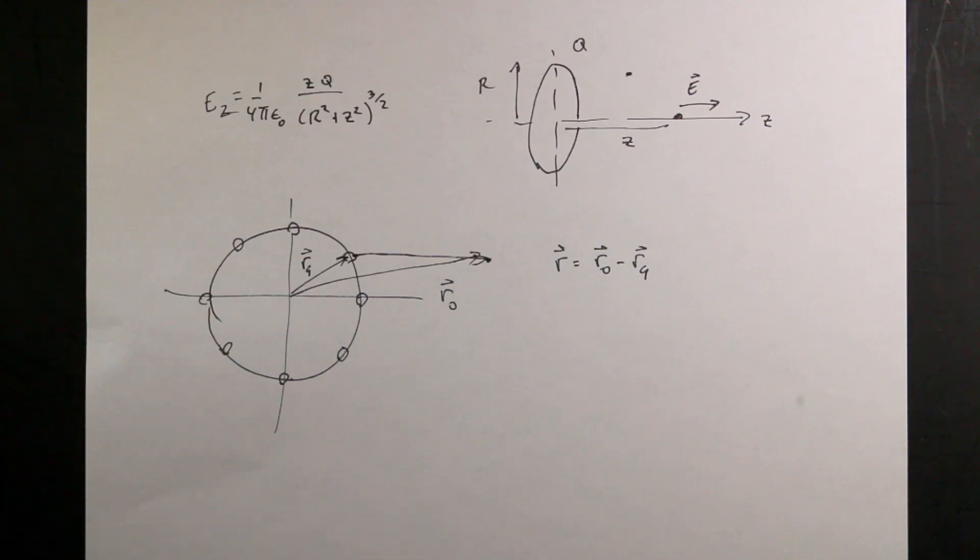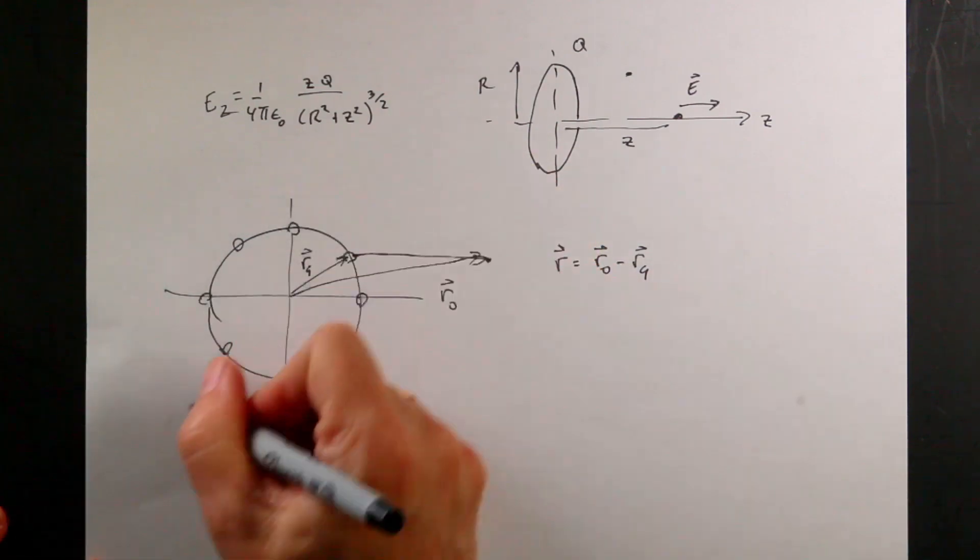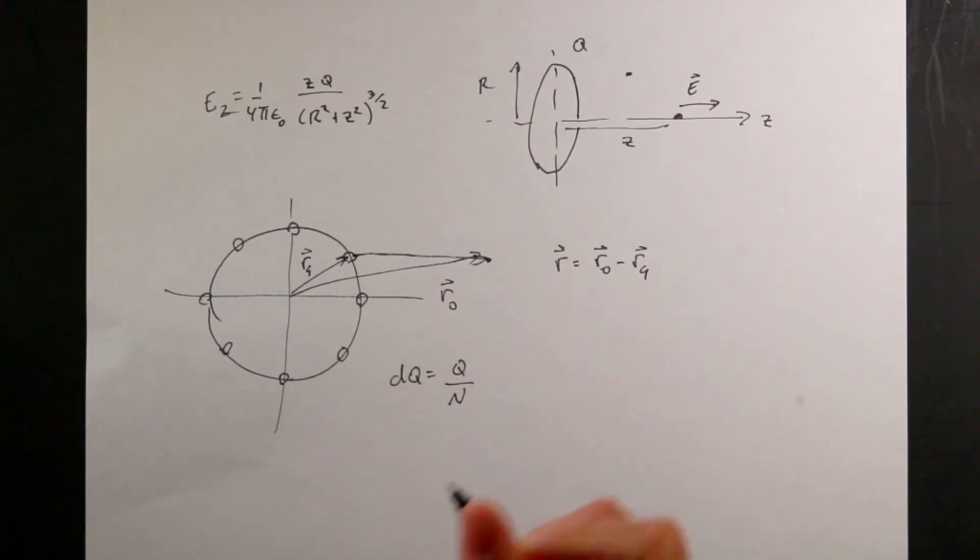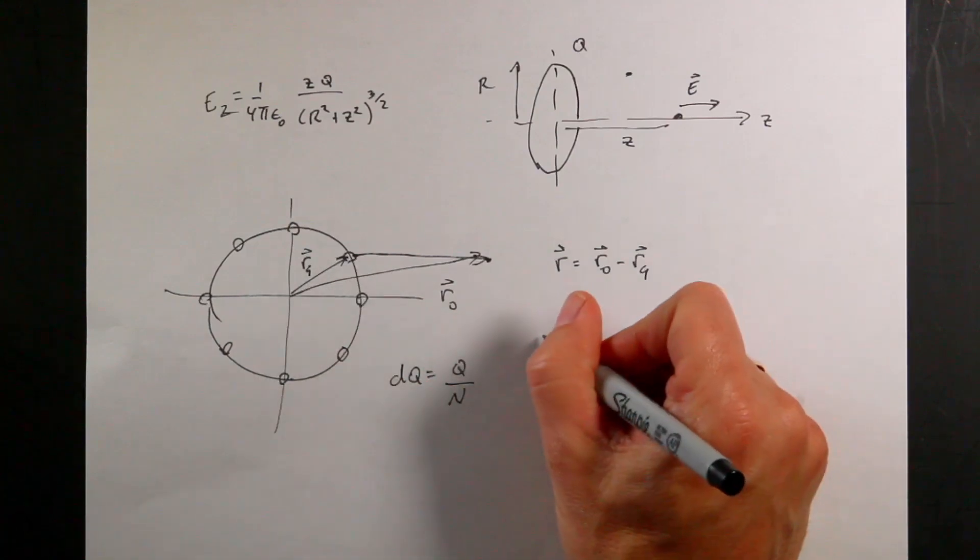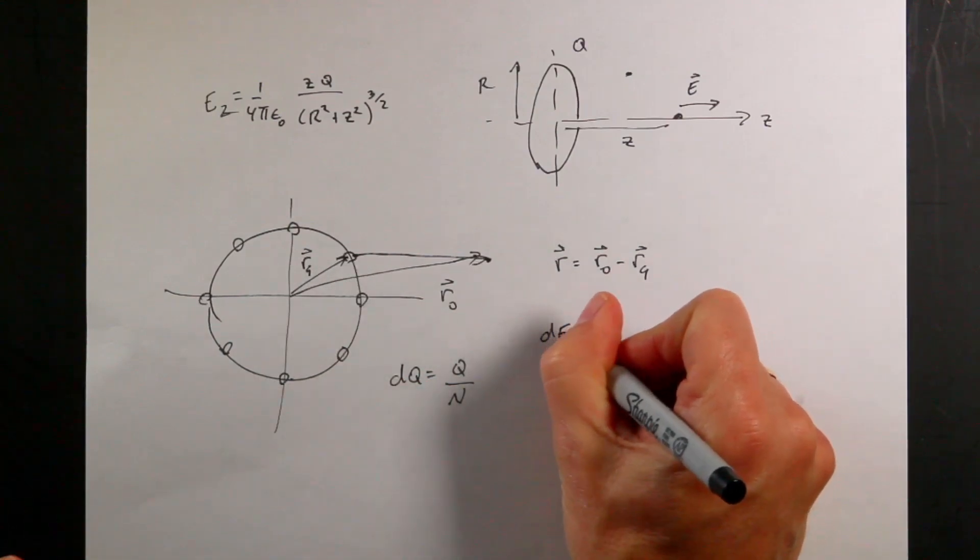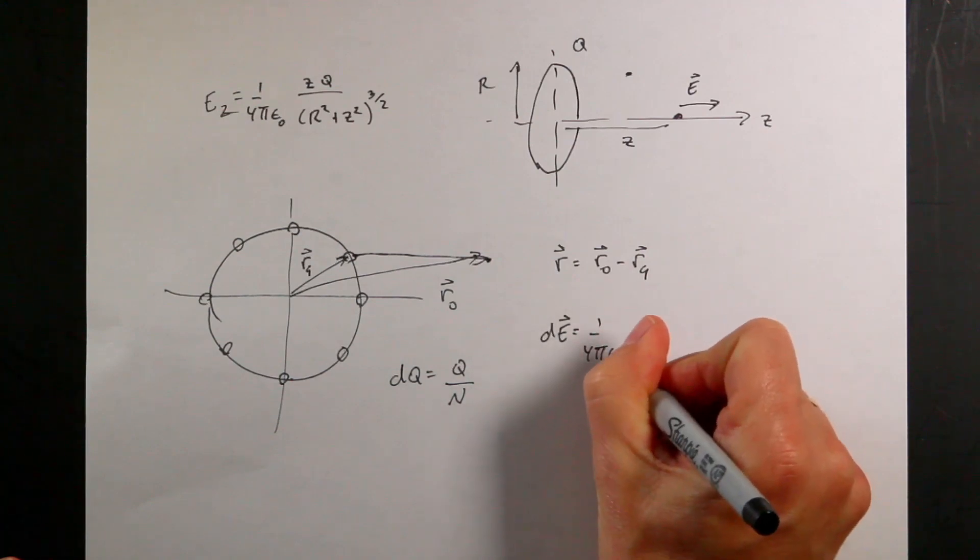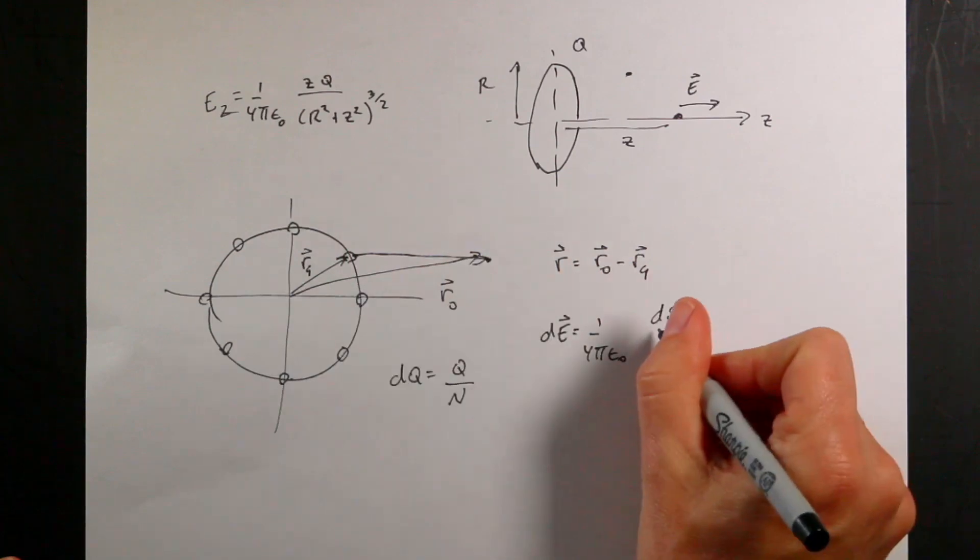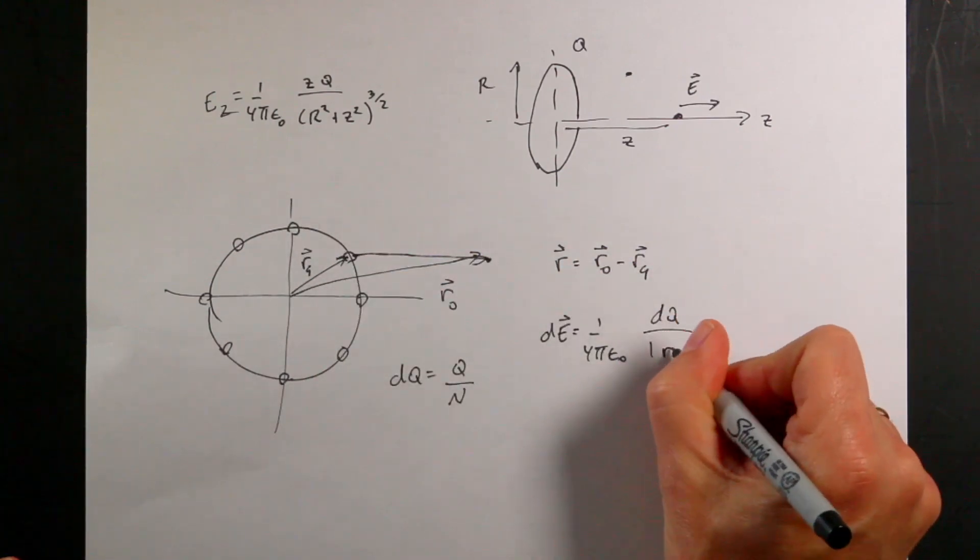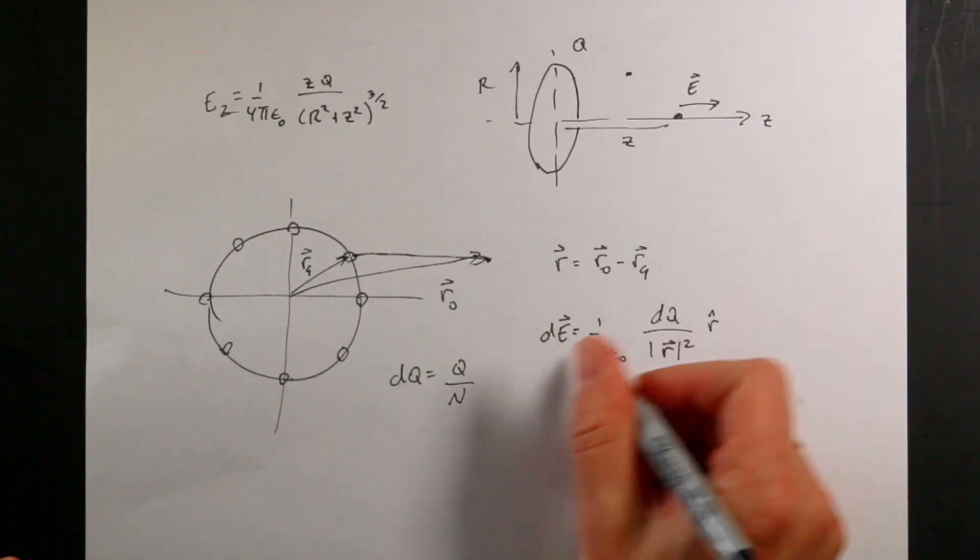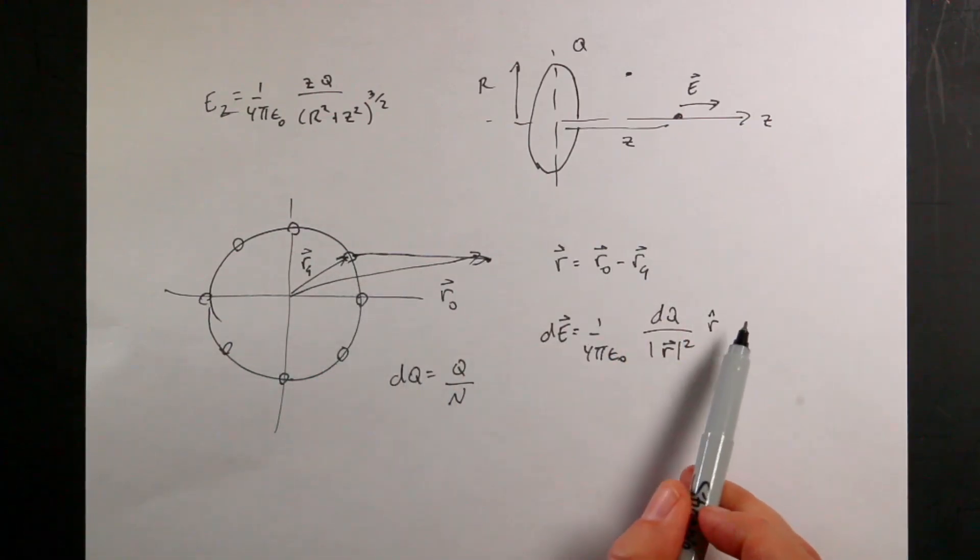Then I can find the electric field. I need dq, which is the total charge q divided by n pieces. Then I can calculate dE = (1/4πε₀) × dq / |r|² × r̂. That r-hat is really important. Remember, r-hat is a vector in the same direction but magnitude one, so r̂ = r / |r|.